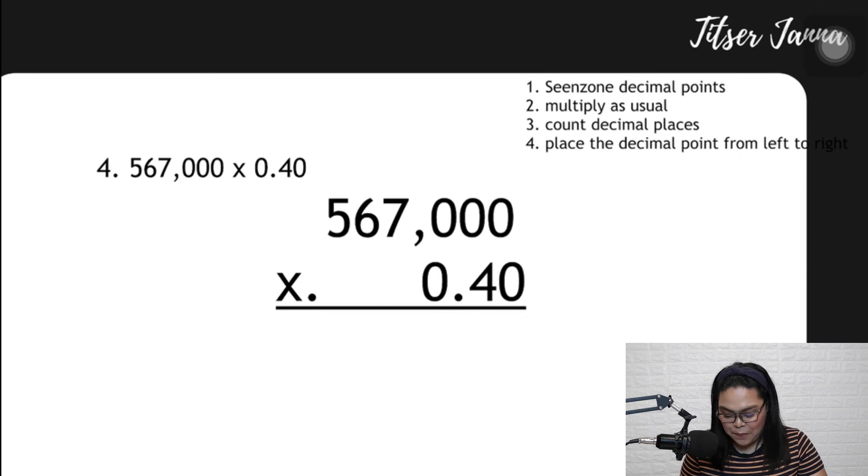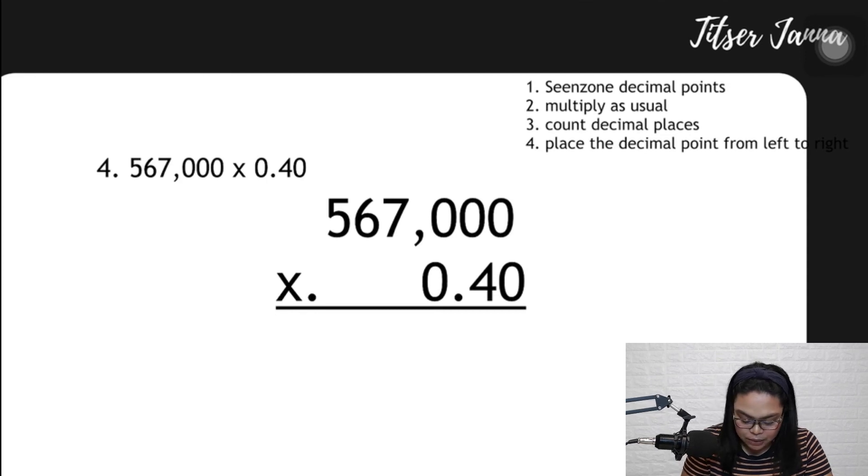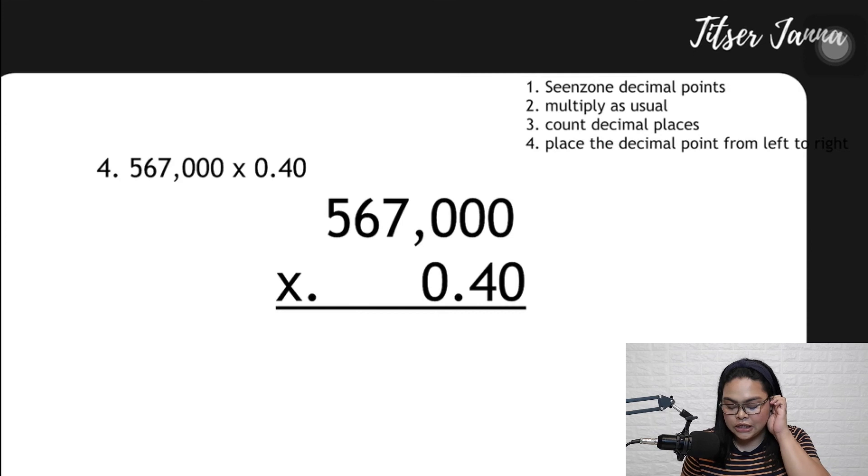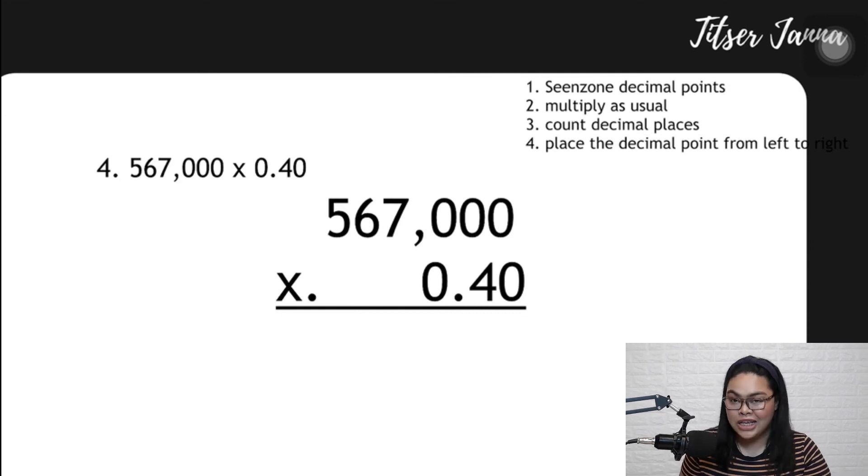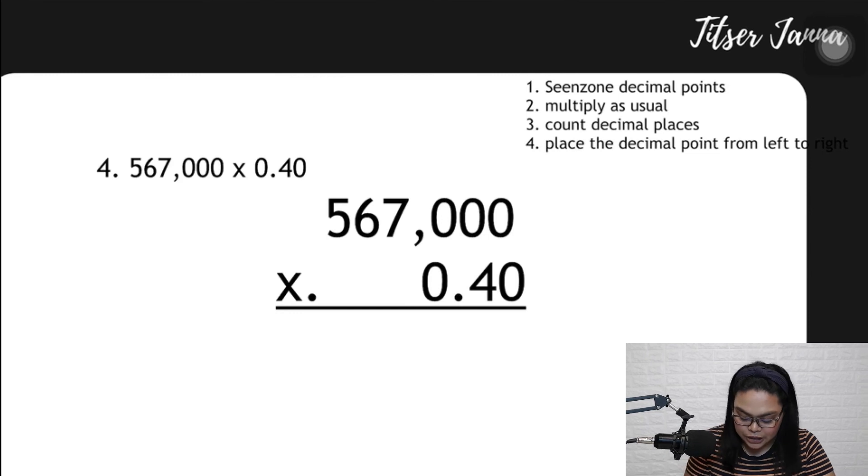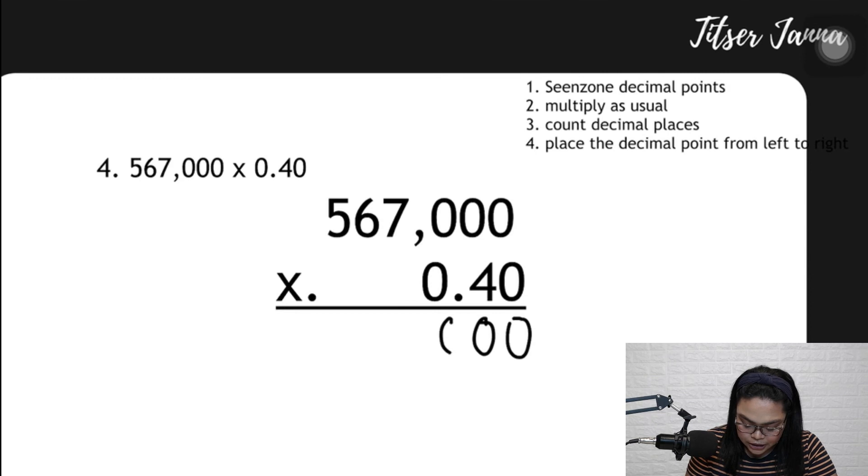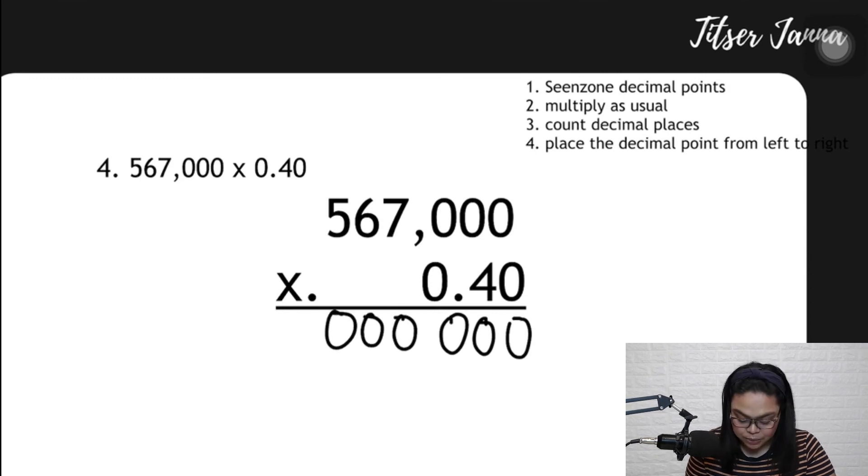And for our last example, I've seen this in PRB questions. So if you don't know what that is, I linked it here. This is 567,000 times 0.40. How do we multiply this? We consider it as just a whole number. So 567,000 times 40. 0 times 0, 0. 0 times 0 is another 0, and then 0. Any number multiplied by zero is zero, practically zero.